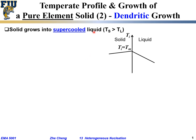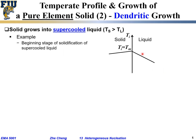Right at the interface between solid and liquid, the temperature is at Tm, the equilibrium melting temperature. This scenario occurs at the beginning stage of solidification into a supercooled liquid. Supercooled liquid means the material exists in a liquid state even below its equilibrium melting temperature — it's not very stable, but at the beginning stage we may observe something like this.